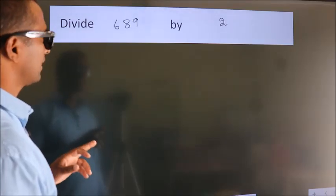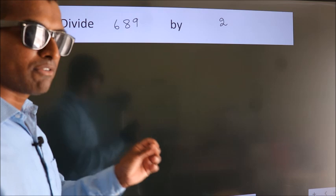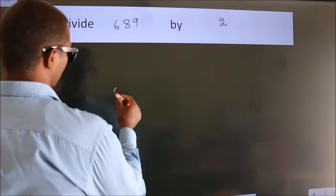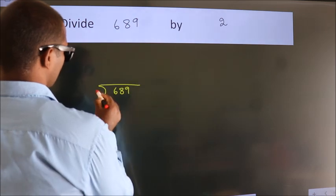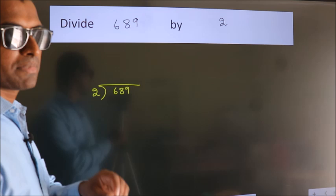Divide 689 by 2. To do this division, we should frame it in this way. 689 here, 2 here. This is your step 1.